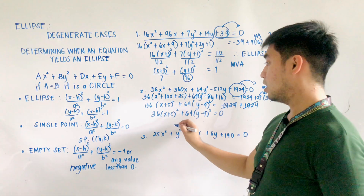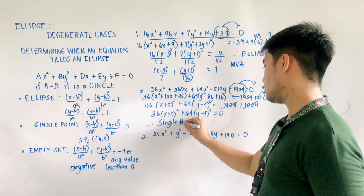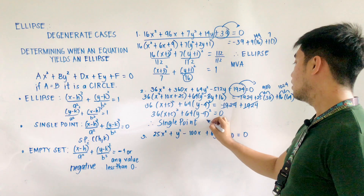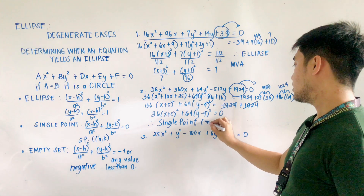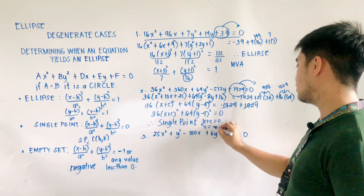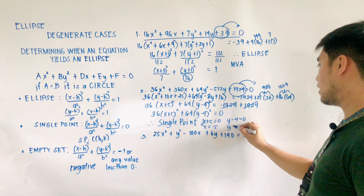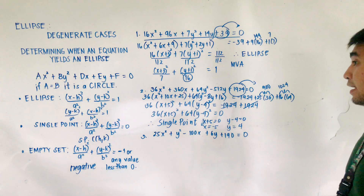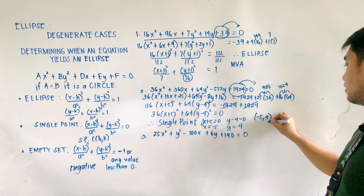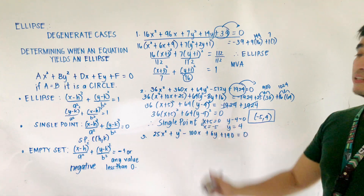This is a single point. To find that point: x + 5 = 0, so x = −5; and y − 4 = 0, so y = 4. The single point is (−5, 4). This is the answer — it is a single point, not an ellipse.